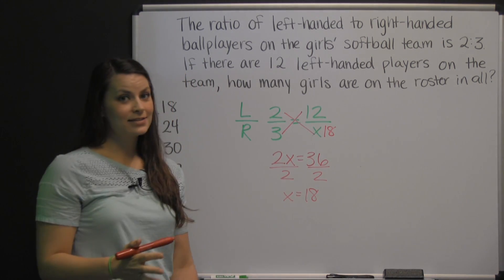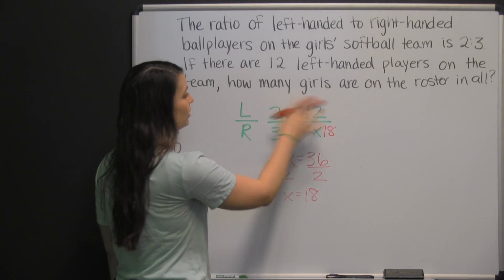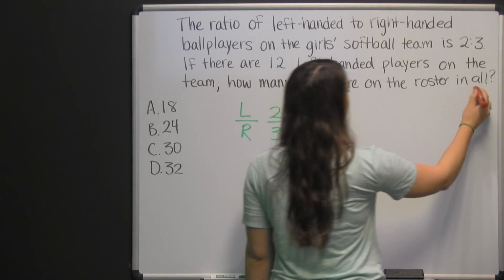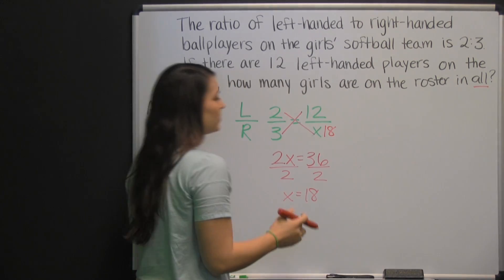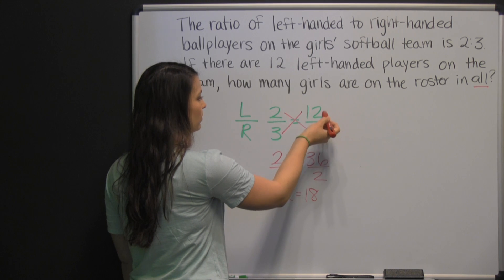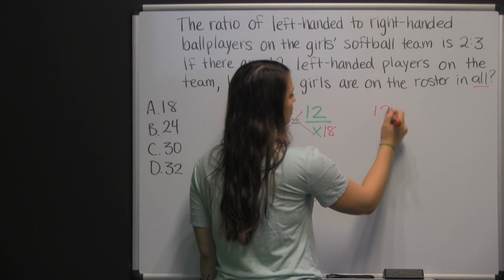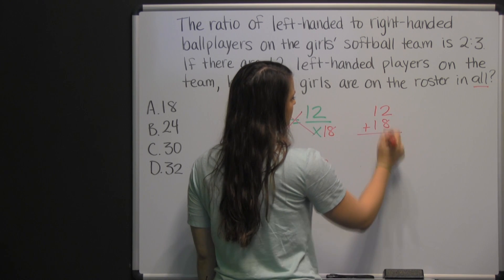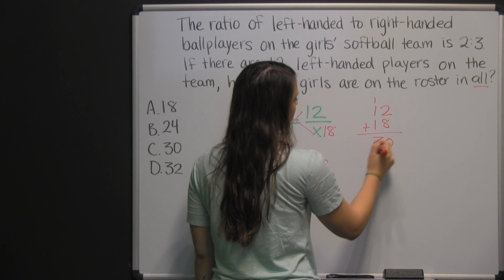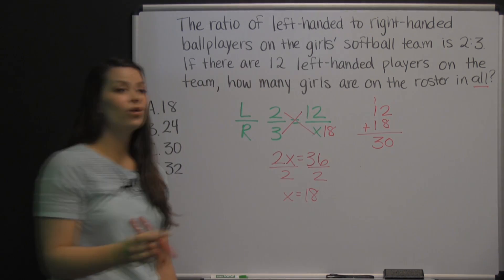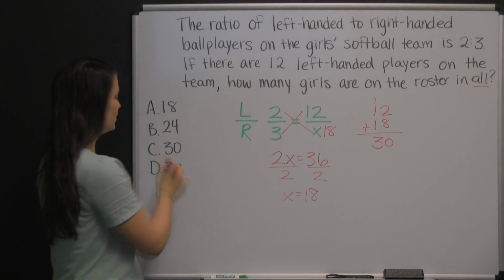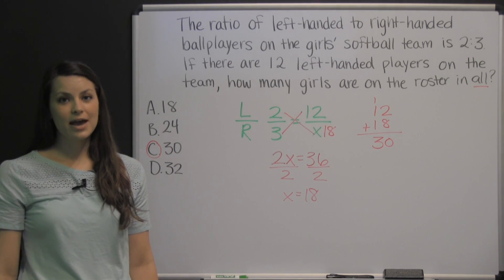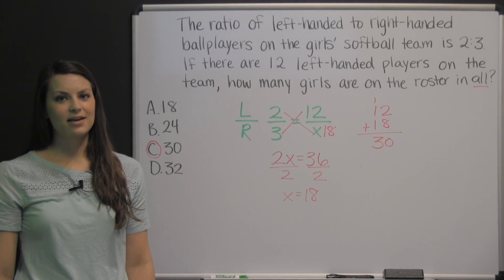But that's not what we were asked. We weren't asked how many girls were right-handed — we were asked how many girls are on the roster in all. That means we need to add our total number of left-handed players and right-handed players together. Twelve plus eighteen: eight plus two is ten, carry the one, and that's thirty. That means there are a total of thirty players on the team. So there's an example of a question you might encounter when you take the TABE test. Good luck!